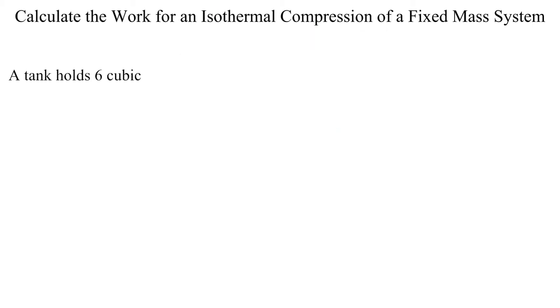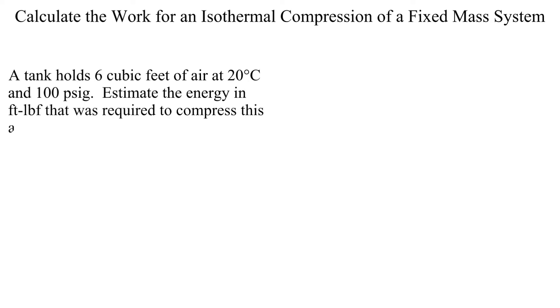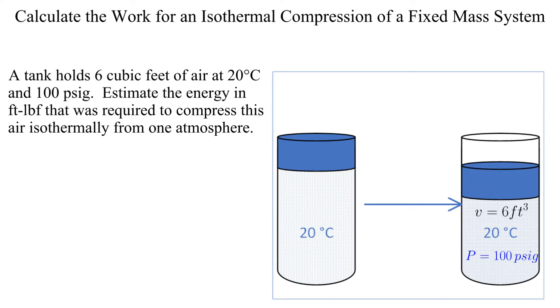We will define the work necessary to compress air starting at a pressure of one atmosphere to a final pressure of 100 psig. The compression is isothermal at a temperature of 20 degrees Celsius. The final volume of the air is 6 cubic feet.